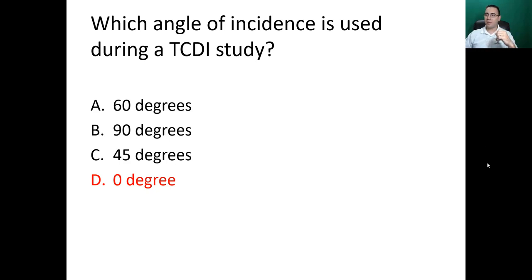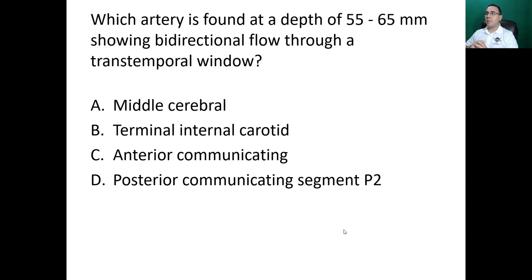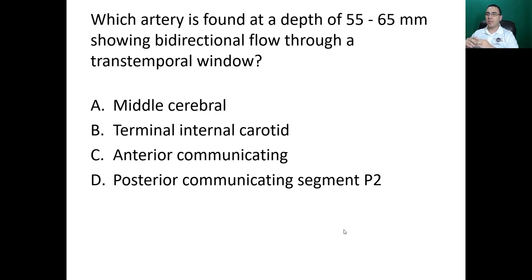Next question: which artery is found at a depth of 55 to 65 millimeters showing bi-directional flow through a trans-temporal window? Options: middle cerebral, terminal internal carotid, anterior communicating, or posterior communicating segment P2. The key is the bi-directional flow. The answer is B: terminal internal carotid — it gives off the middle cerebral artery moving toward the transducer and the anterior cerebral artery moving away, producing bi-directional flow when the sample volume is placed at the terminal ICA.